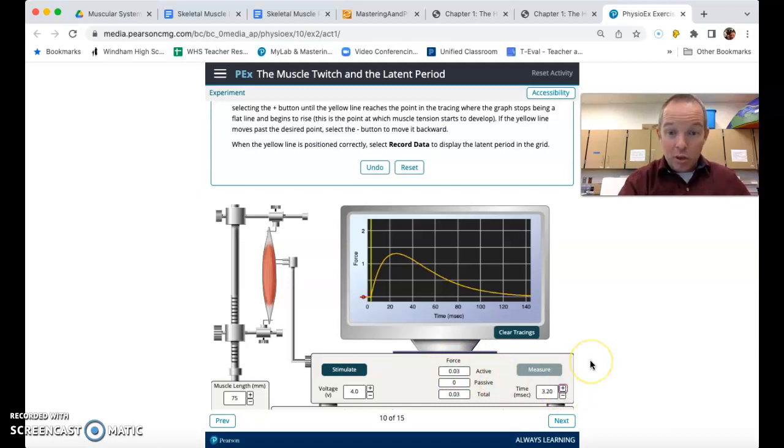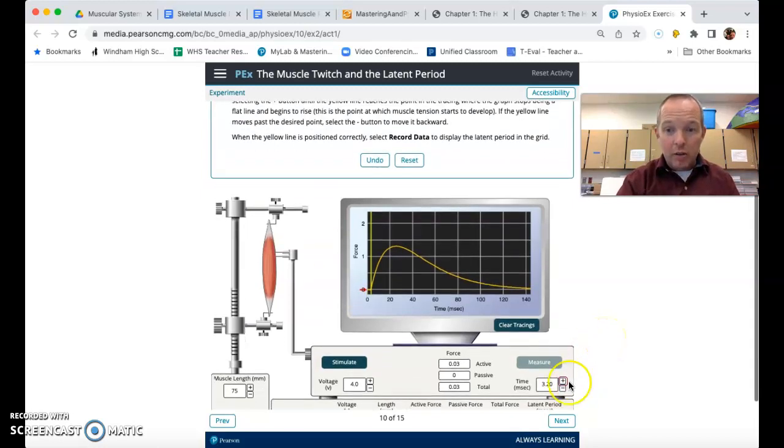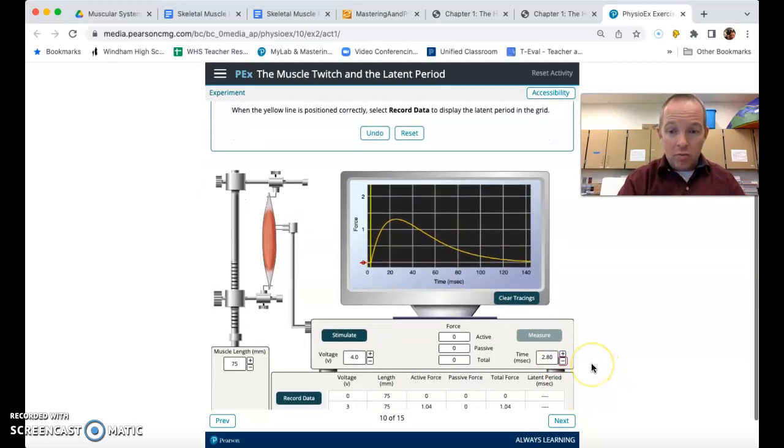And if we go to 3.2, we'll notice that that is the point at which we start to generate force. So our latent period, we're going to back up one from that. And 2.80 milliseconds is our latent period. And so we're going to record that.